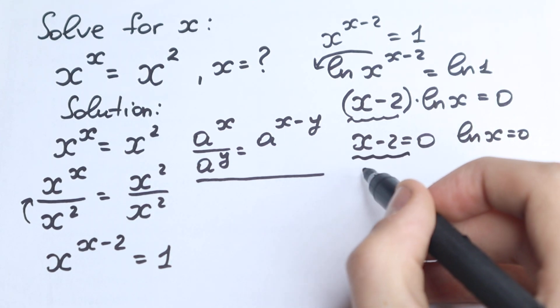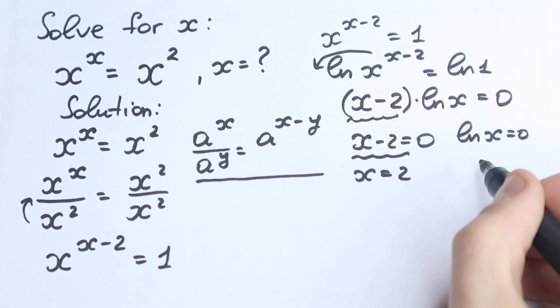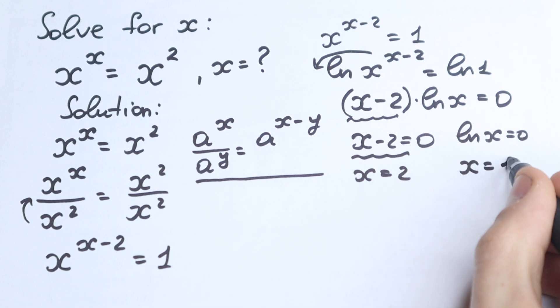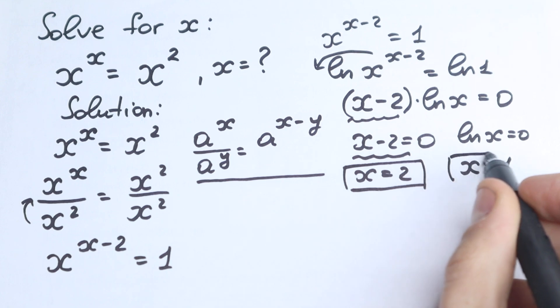From here really obvious solution x equal to 2. And from here natural log x equal to 0, x equal to 1. And really important moment, we have two roots, x equal to 2 and x equal to 1.